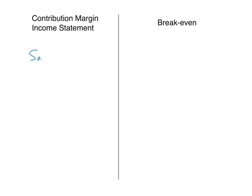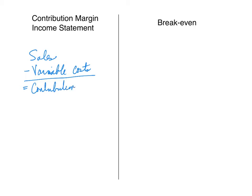We're going to start with our sales as usual, but then we're going to subtract our variable costs from our sales. That's going to give us something called contribution margin — hence contribution margin income statement. And from the contribution margin, we're going to subtract our fixed costs, which will give us our operating income.